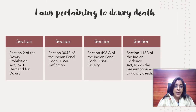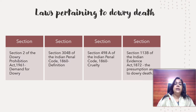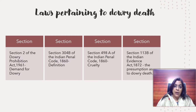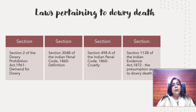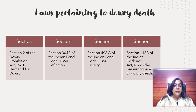There are key sections we need to understand. First, section 2 of the Dowry Prohibition Act 1961, which defines the meaning of dowry. Second, section 304b of IPC, which discusses dowry death. Third, section 498A of IPC, which deals with cruelty for the demand of dowry — I will make a separate video for that. And fourth, section 113b of the Indian Evidence Act, which must be read along with section 304b to complete the picture.